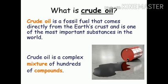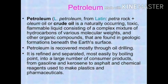After digging the earth, the fossil fuel that comes directly from the earth's crust is one of the most important substances in the world, and it is known as crude oil. Crude oil is a complex mixture of hundreds of compounds, also known as hydrocarbons. Petroleum is derived from the Latin words petra meaning rock and oleum meaning oil. It is a naturally occurring, toxic, flammable liquid consisting of a complex mixture of hydrocarbons of various molecular weights and other organic compounds.